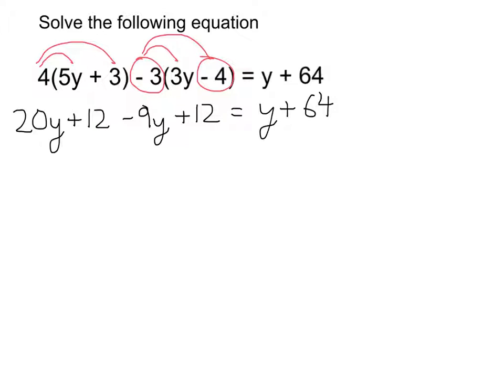Now before I take anything away from either side, I'm going to sort out that left-hand side. There's more than one number term, more than one letter term on that side. So I don't want to do anything until I've got one of each. So here's my 20y and my minus 9y.